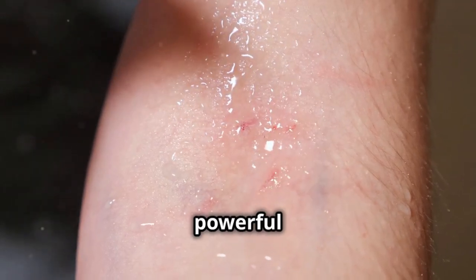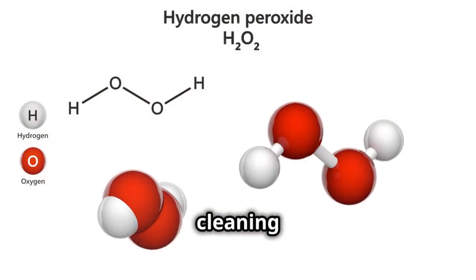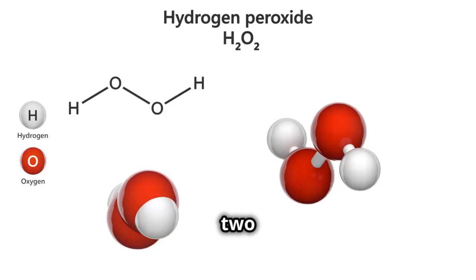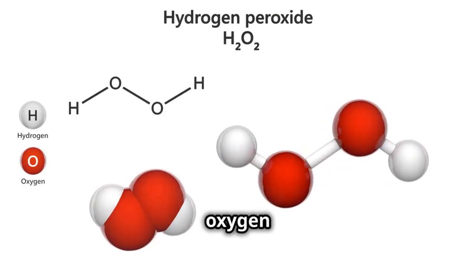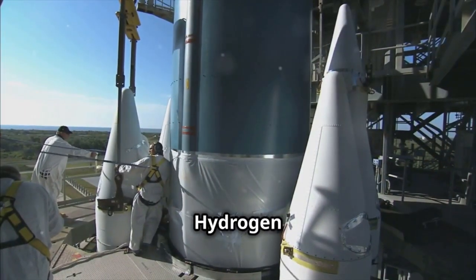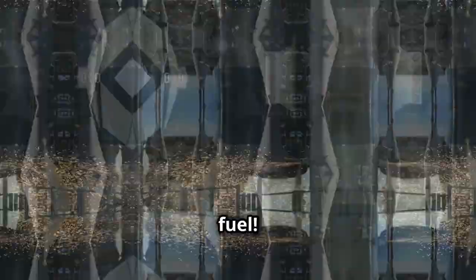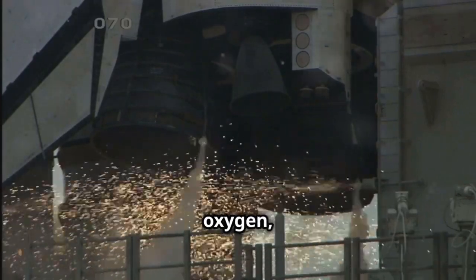Hydrogen peroxide, H2O2: ever use this to clean a cut? It's a powerful disinfectant and it gets its cleaning power from the bond between two hydrogen atoms and two oxygen atoms. And guess what, hydrogen is even used as rocket fuel. When hydrogen combines with oxygen, it releases a tremendous amount of energy, propelling rockets into space.